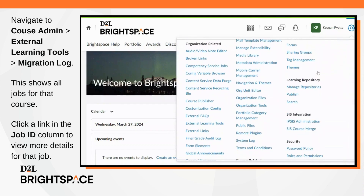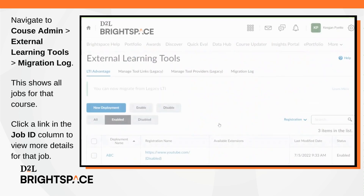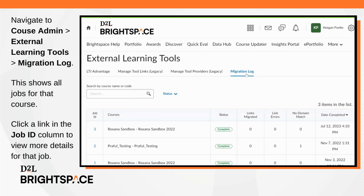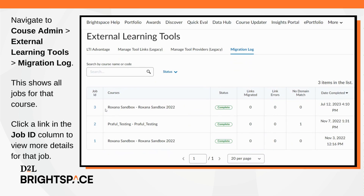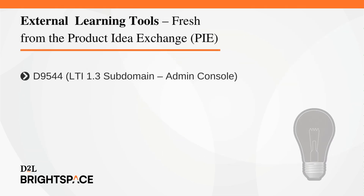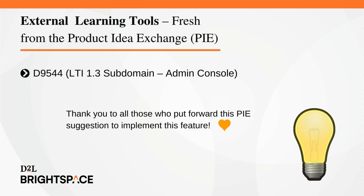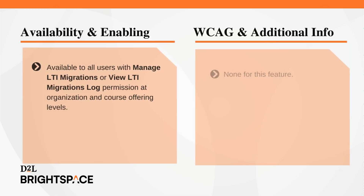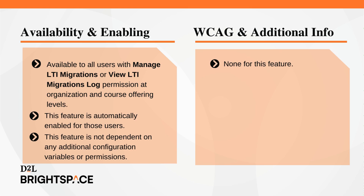Navigate to Course Admin > External Learning Tools > Migration Log. This page displays all jobs for that course. Click a link in the Job ID column to view more details for that job. The External Learning Tools feature is available to all users with Manage LTI Migrations or View LTI Migrations Log permission at the organization and course offering levels, and is automatically enabled for those users. It is not dependent on any additional configuration variables or permissions.